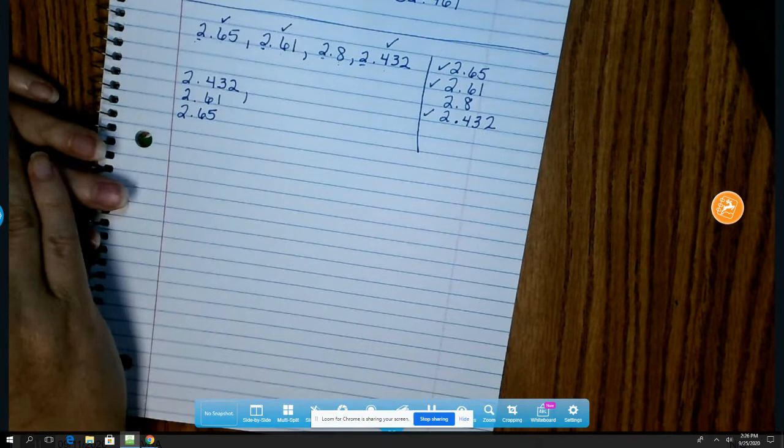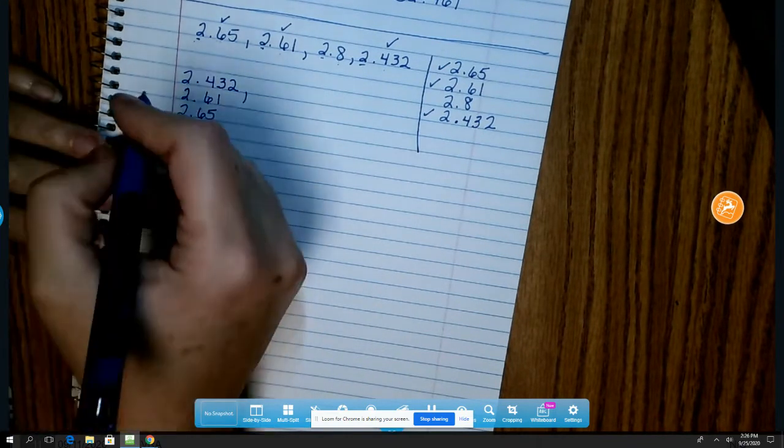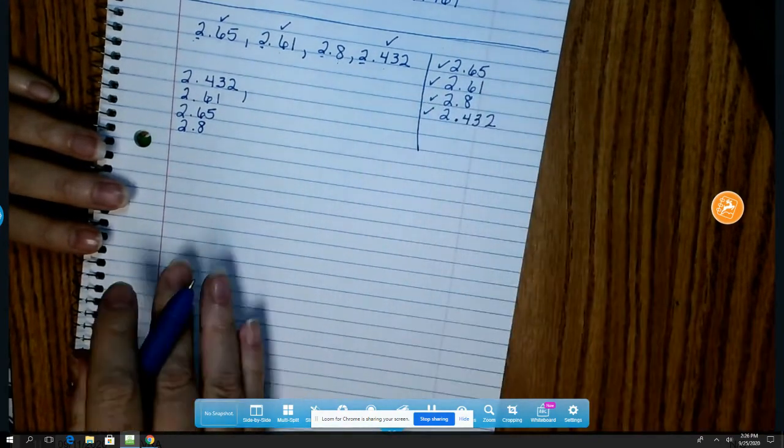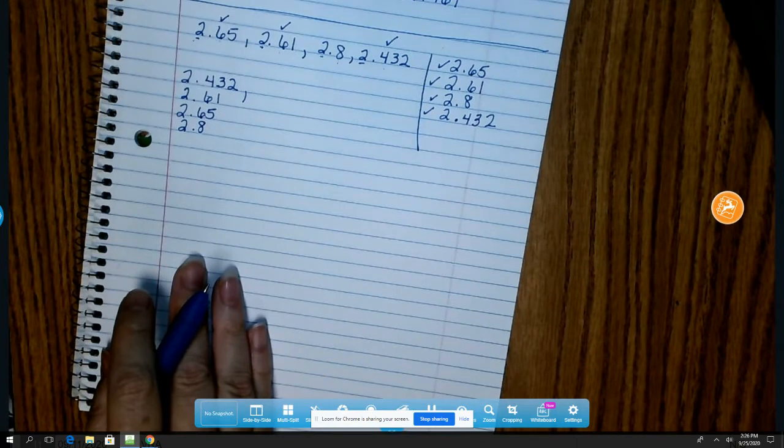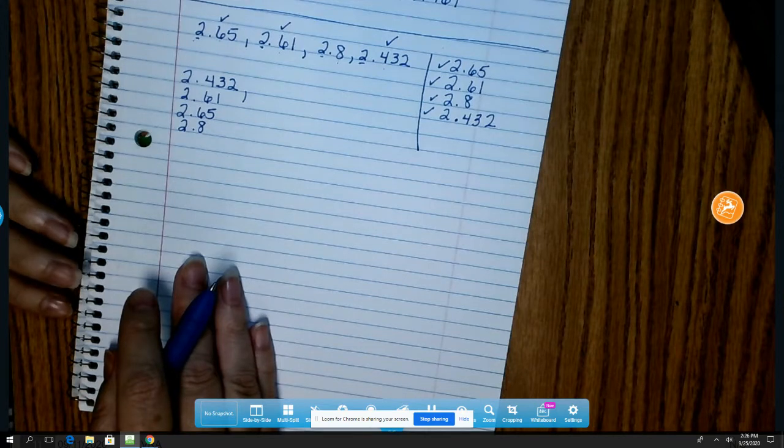And since I only have one left, that must mean that 2 and 8 tenths is the largest. And so that's how I order them in increasing order.